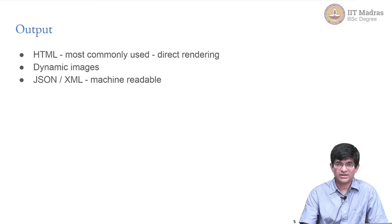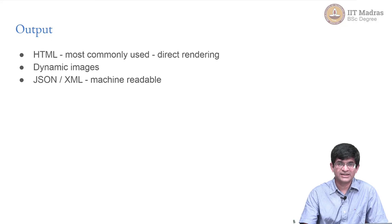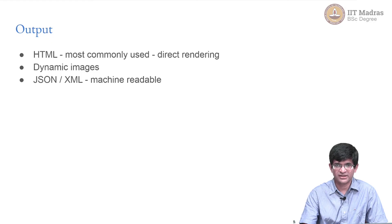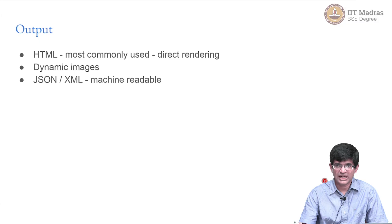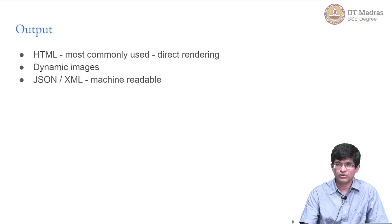On the other hand, consider the example of a histogram of marks — that can also be thought of as a view. The histogram is dynamically generated each time you select a course. I might cache the generated image as an optimization, but in principle it is generated fresh every time. So an image, for example, could be a view — it is not normally what we think of as a view, but it could be.